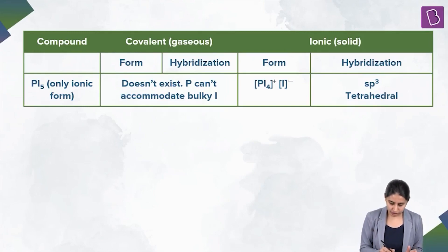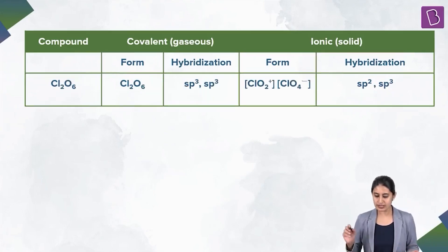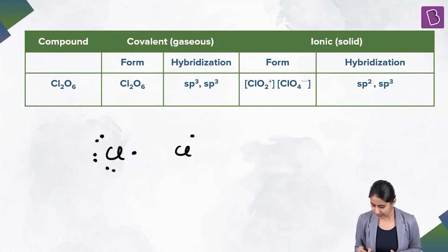Next one that you must remember is Cl2O6. The covalent form exists as Cl2O6 only. Cl2O6 in the valence shell has 7 electrons. Similarly, the other chlorine has 7. So there is sharing of electron between the two chlorines.